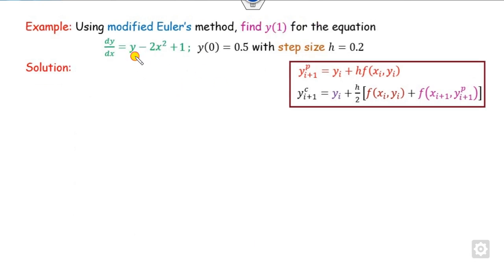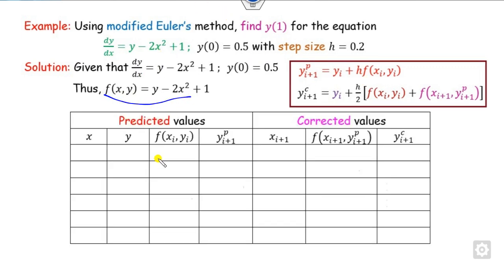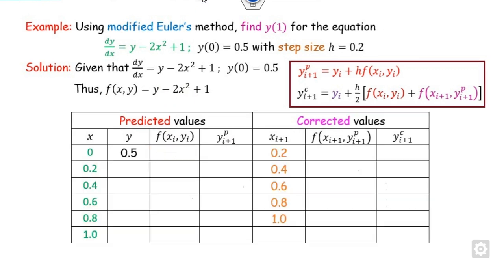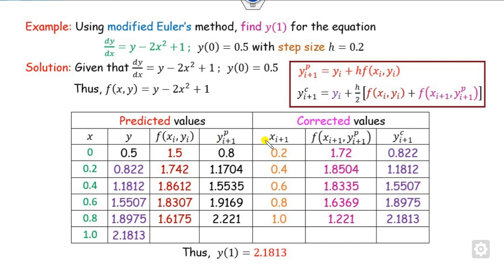For Example 4, f(x, y) = y − 2x² + 1 with initial condition y(0) = 0.5 and step size h = 0.2, targeting y(1). We compute f(0, 0.5) = 0.5 − 0 + 1 = 1.5, then the predictor y_1^p = 0.5 + 0.2×1.5. We continue step by step until x = 1.0 is reached, yielding the final answer for y(1).